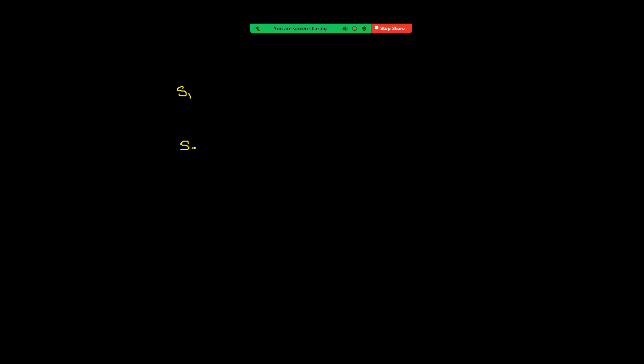Let us consider two sound sources, S1 and S2 — we can say these are two sound speakers from where sound is coming out. Consider one point P. Sound is reaching from S1 to point P and from S2 to point P. Let the distance from S1 to P equal to X1, and from S2 to P equal to X2.